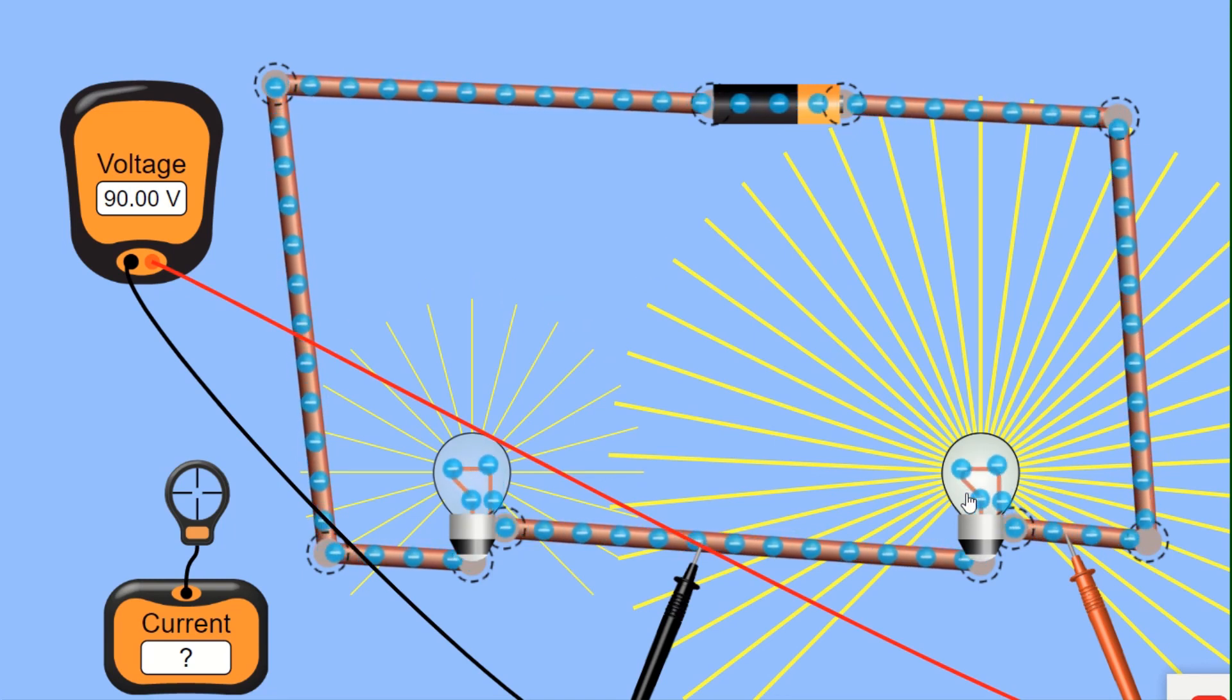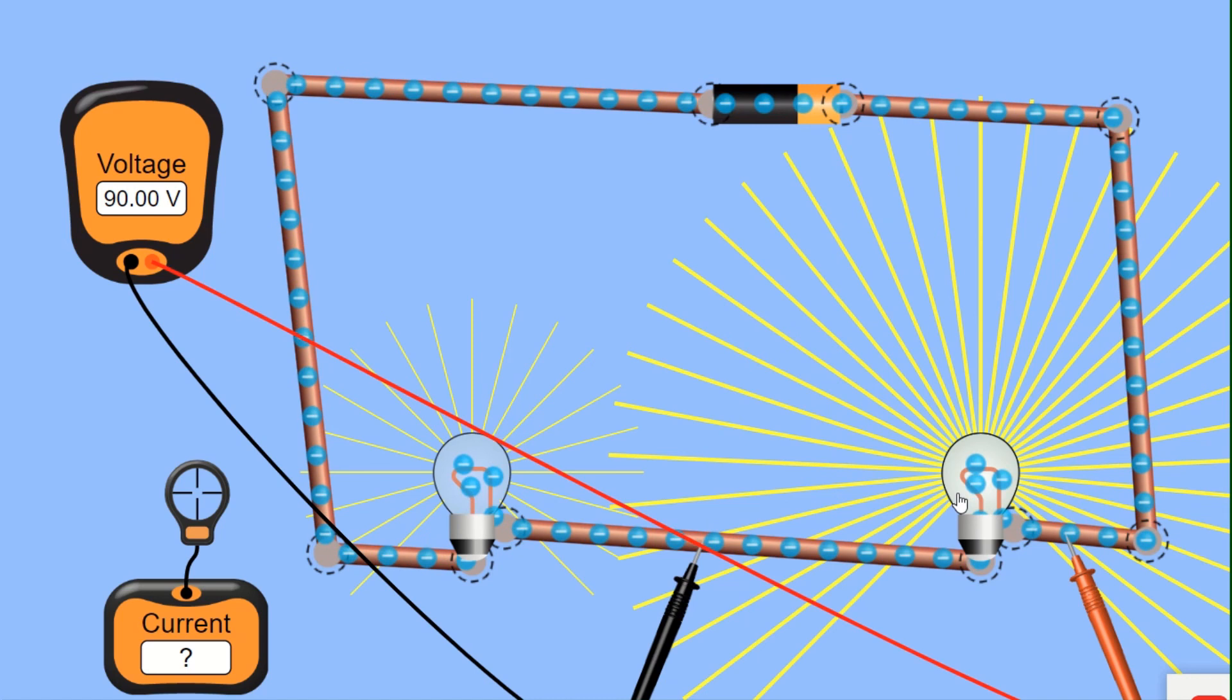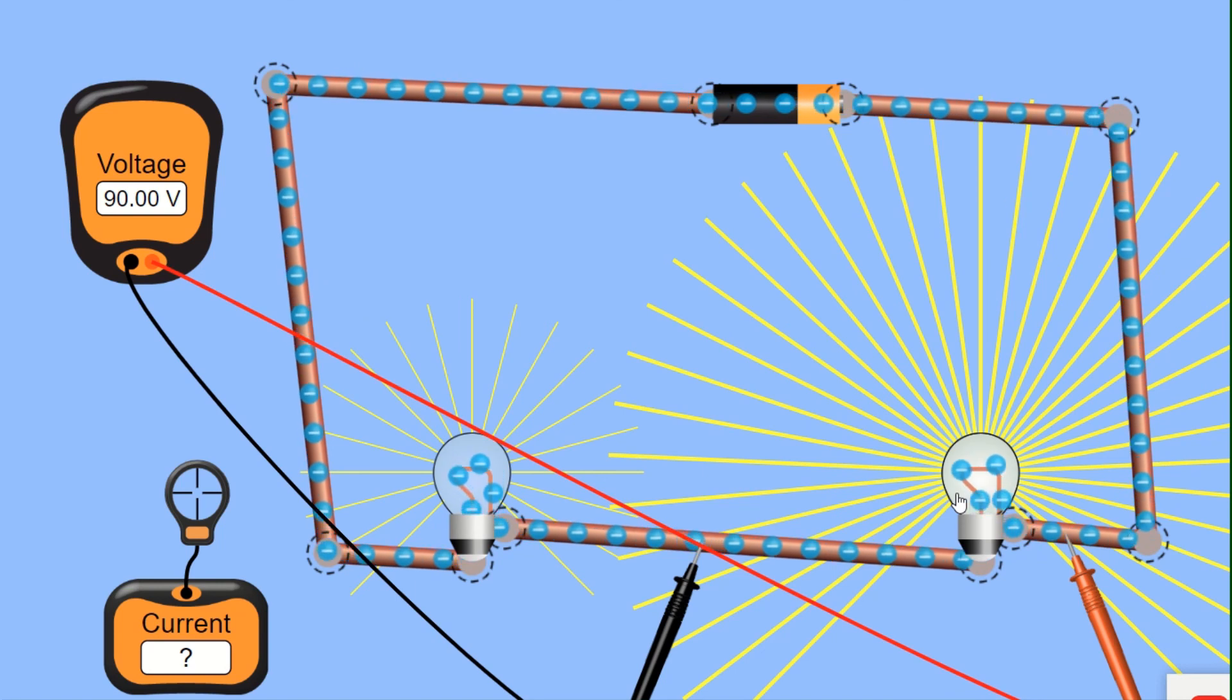Takeaways from this, current is a conserved quantity. It's the same all around the circuit, but crucially, that new quantity voltage is the amount of energy supplied to each coulomb by the battery or the amount of energy it transfers out of the circuit as it goes through a component.